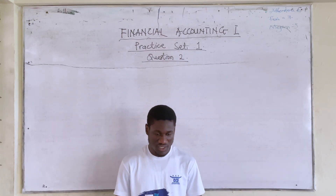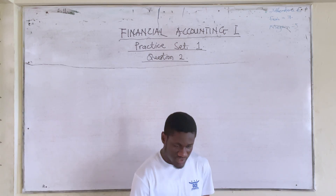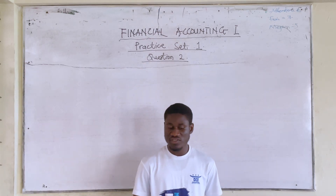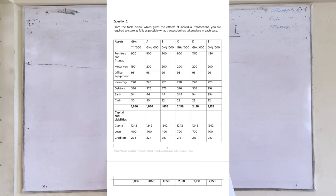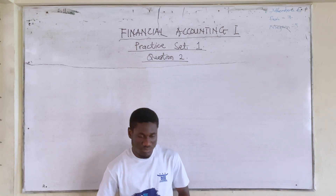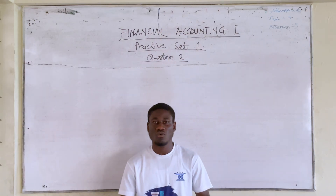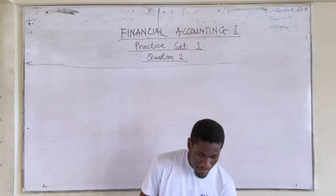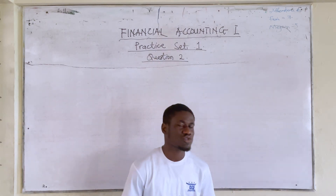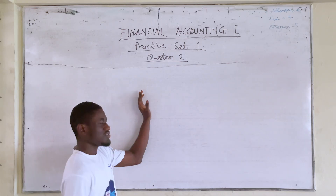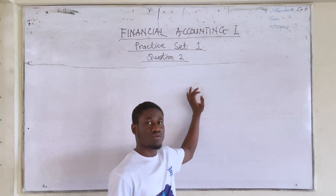Comparing the first column to A, furniture was the same, motor bank increased by 10,000, office was the same, inventory was the same, debt was the same, bank decreased by 10,000, cash was the same, capital was the same, loan was the same, and creditors were the same. So we can see that motor bank increased by 10,000 and bank decreased by 10,000.